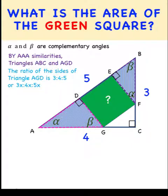By angle, angle, angle similarity also, we can show that triangle ABC and triangle FBE are also similar triangles.